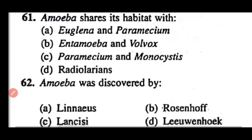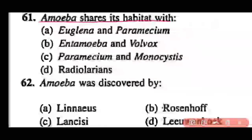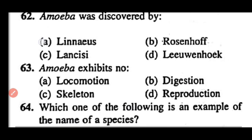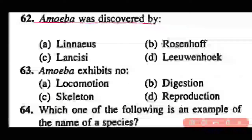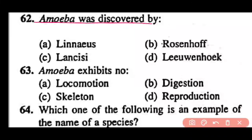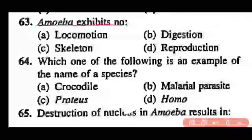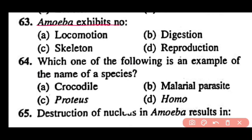Question 61: Amoeba shares its habitat with Euglena and Paramecium (option A). Amoeba occurs in the same place where Euglena and Paramecium are present. Question 62: Amoeba was discovered by Linus, Rosenhoff, Lancisi, or Leeuwenhoek? Correct answer is option B. Amoeba was discovered by Rosenhoff. Question 63: Amoeba exhibits no locomotion, no digestion, no skeleton, or no reproduction? Correct answer is option C. Skeleton is absent in Amoeba.